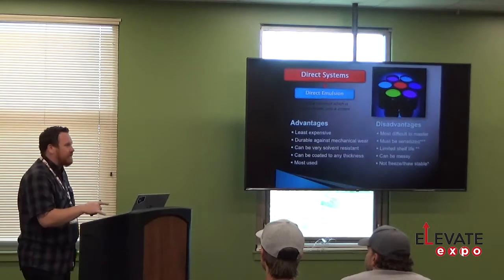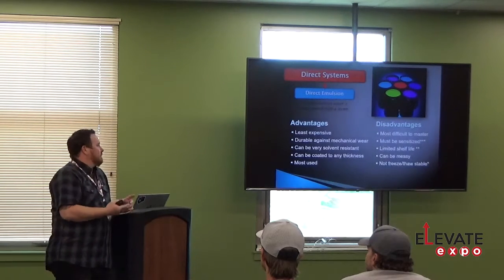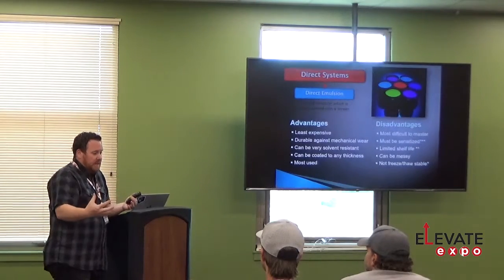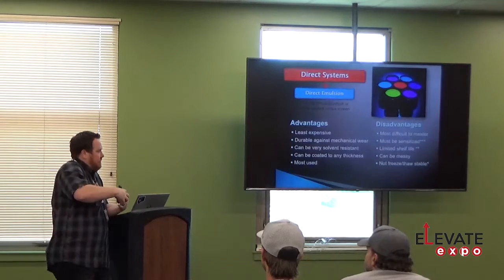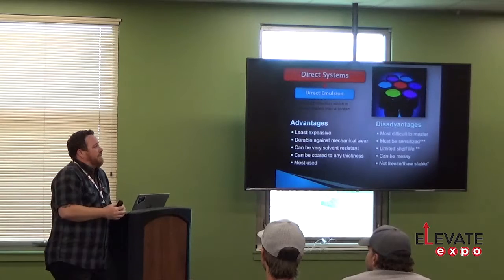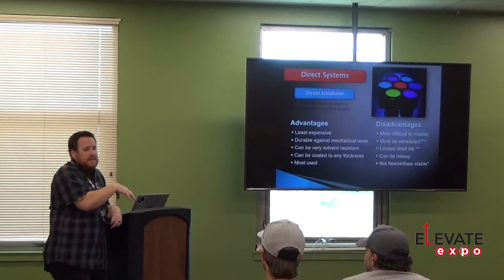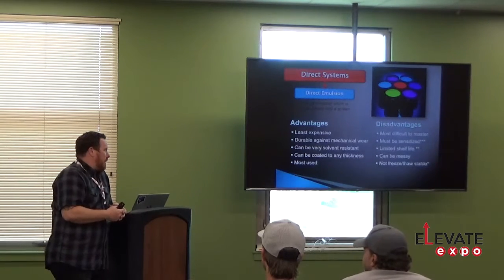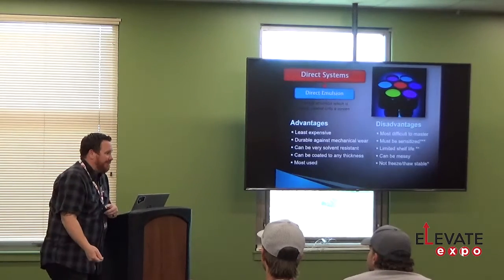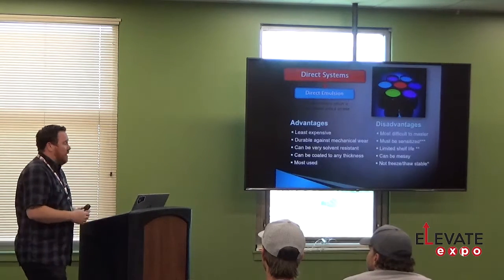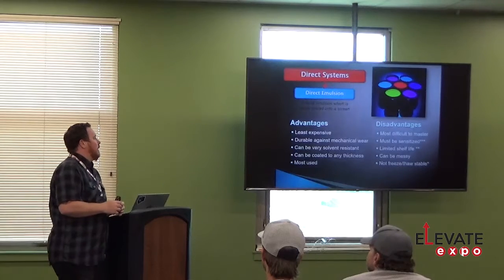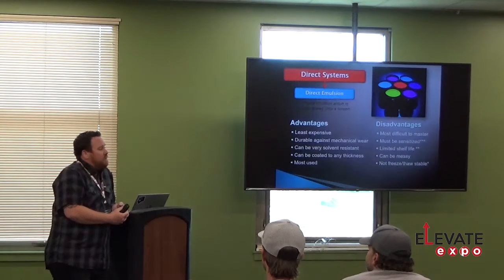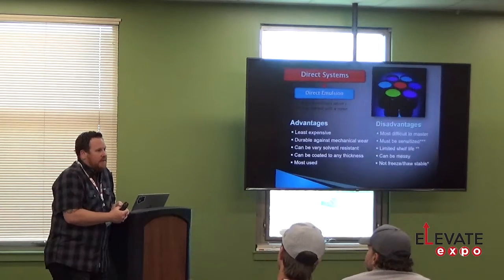Direct emulsion is the liquid emulsion coated on the screen using a scoop coater — by hand or with automated equipment. The advantages: it's the least expensive per screen by far, very durable to mechanical wear because it completely encapsulates the mesh from both sides. It can be very solvent resistant or water resistant depending on the product, can be coated to any thickness, and it is by far the most commonly used emulsion today.